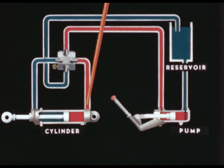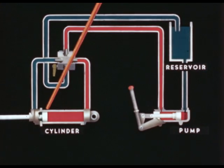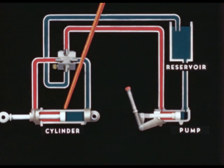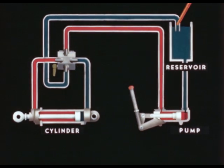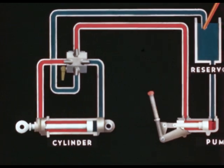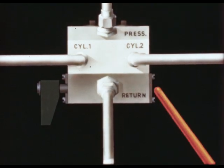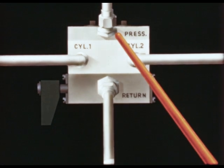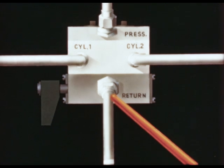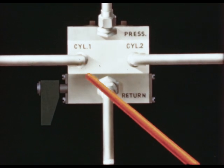The selector valve directs the fluid under pressure to either end of the cylinder. At the same time, it permits the return of the fluid from the other end to the reservoir. The pressure line from the pump leads into the selector valve at the top. The return line to the reservoir leads out of the bottom. The lines to the cylinder come out of the sides.